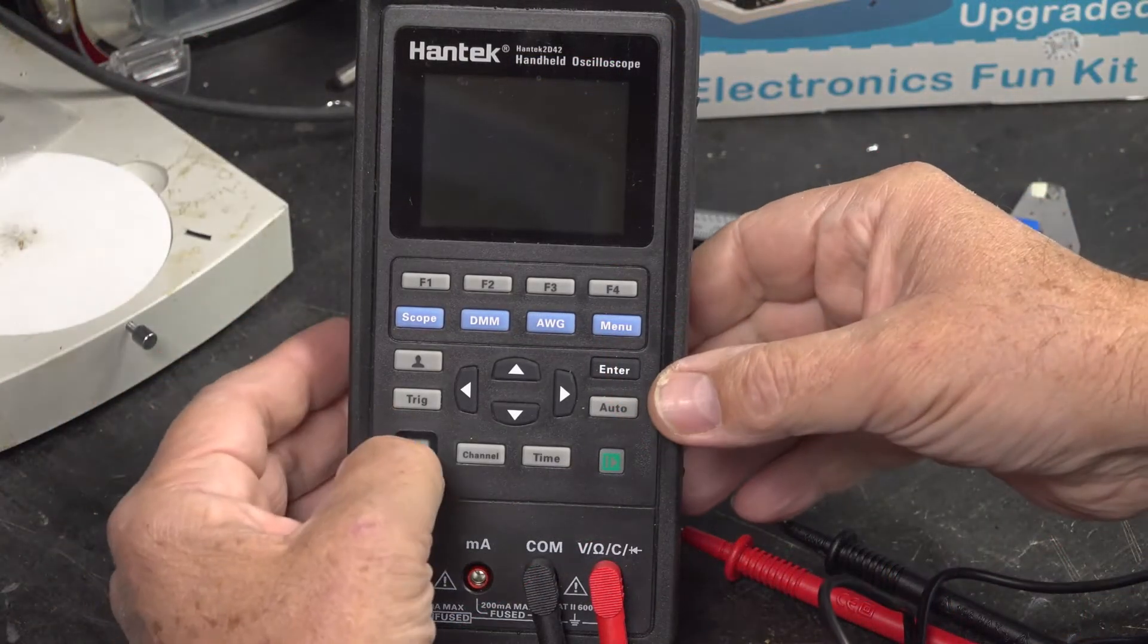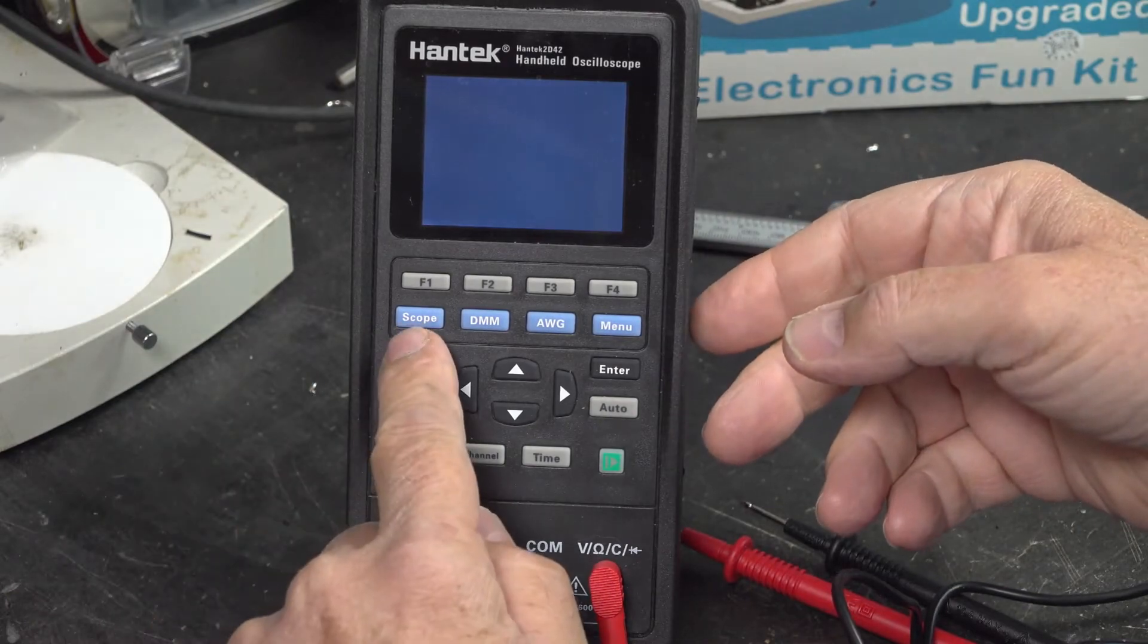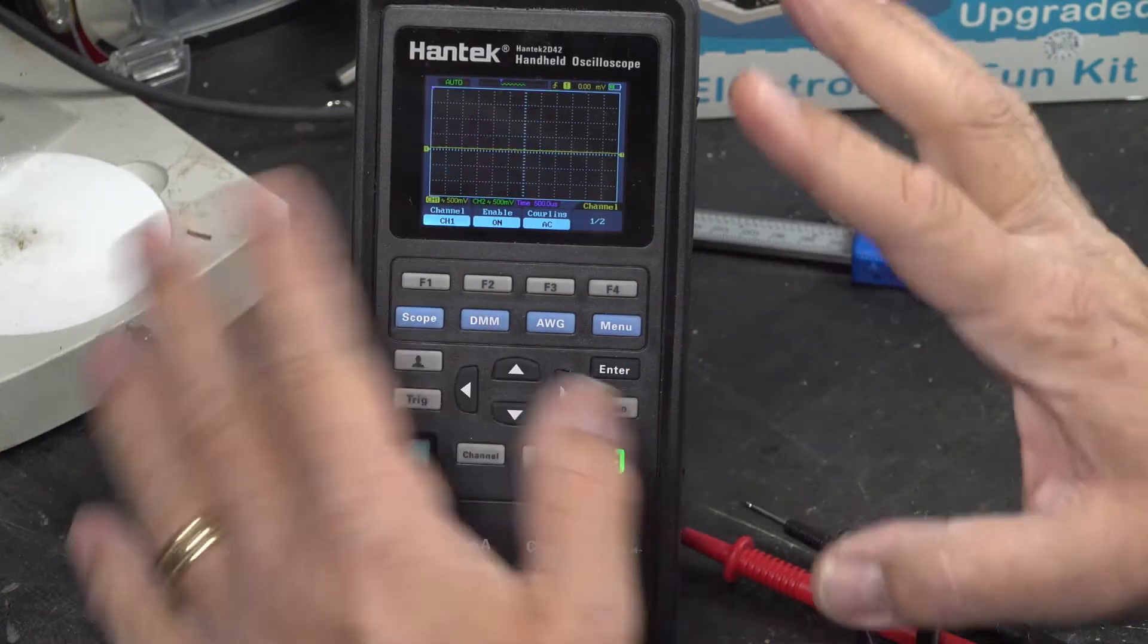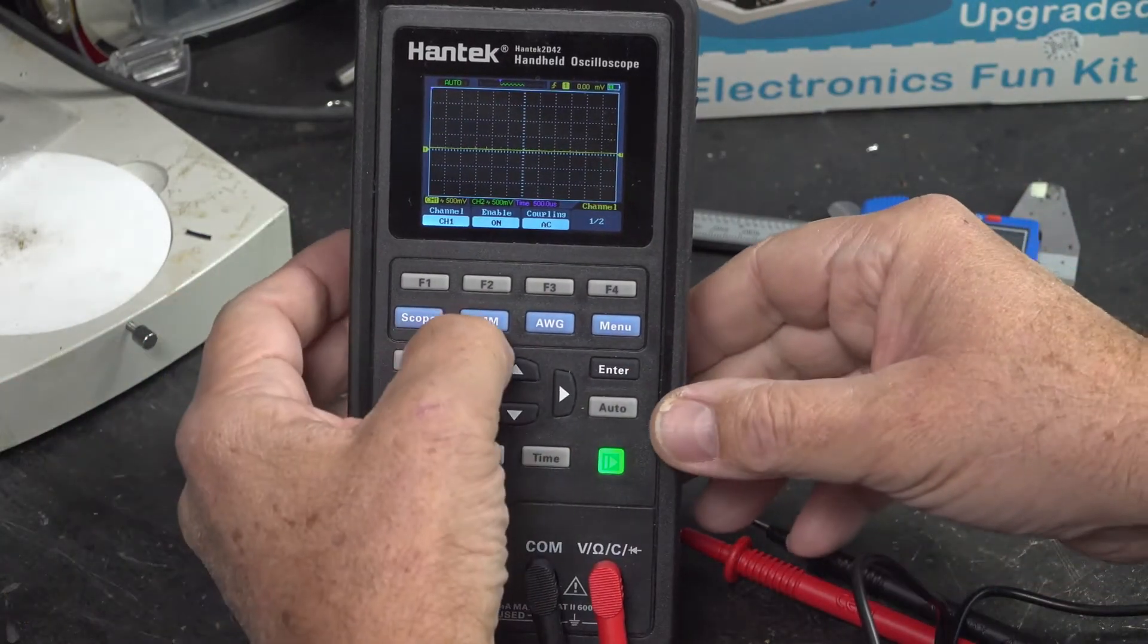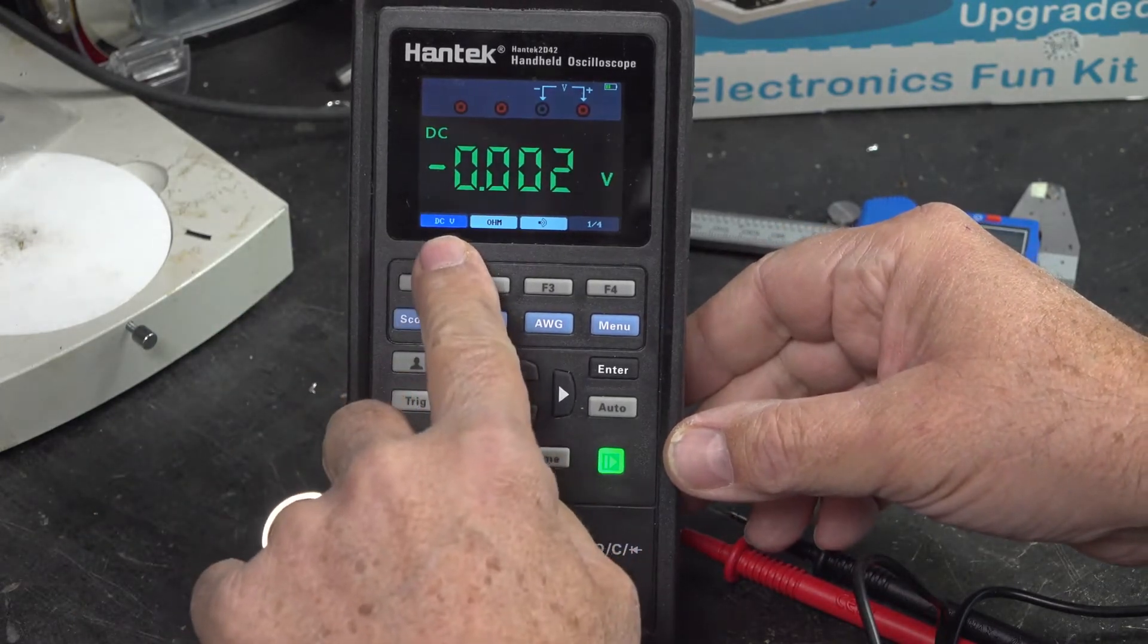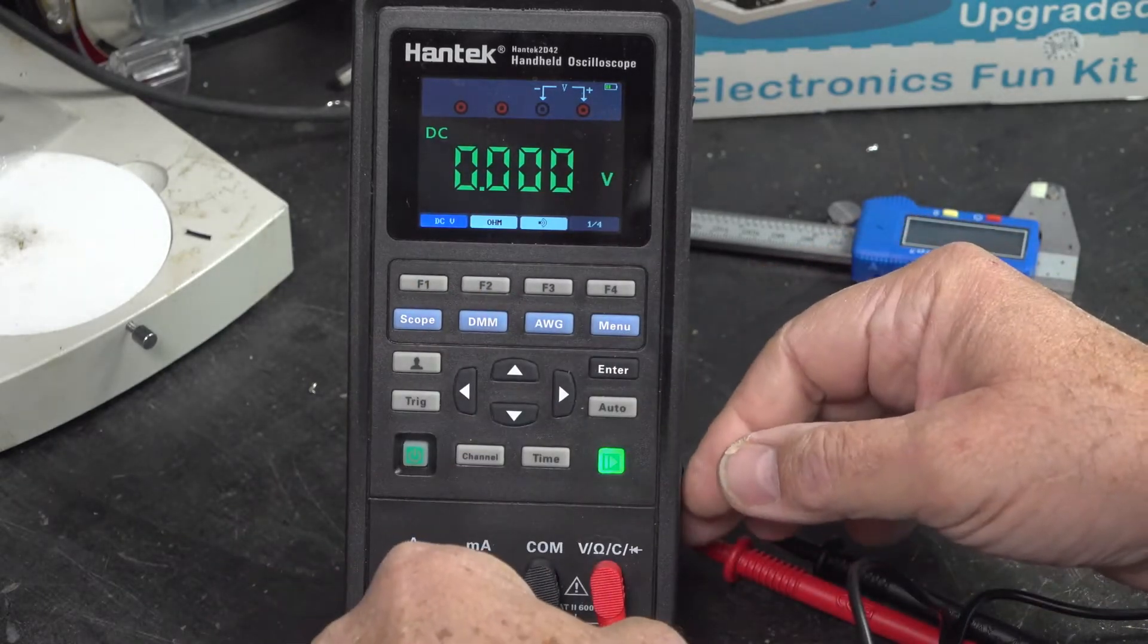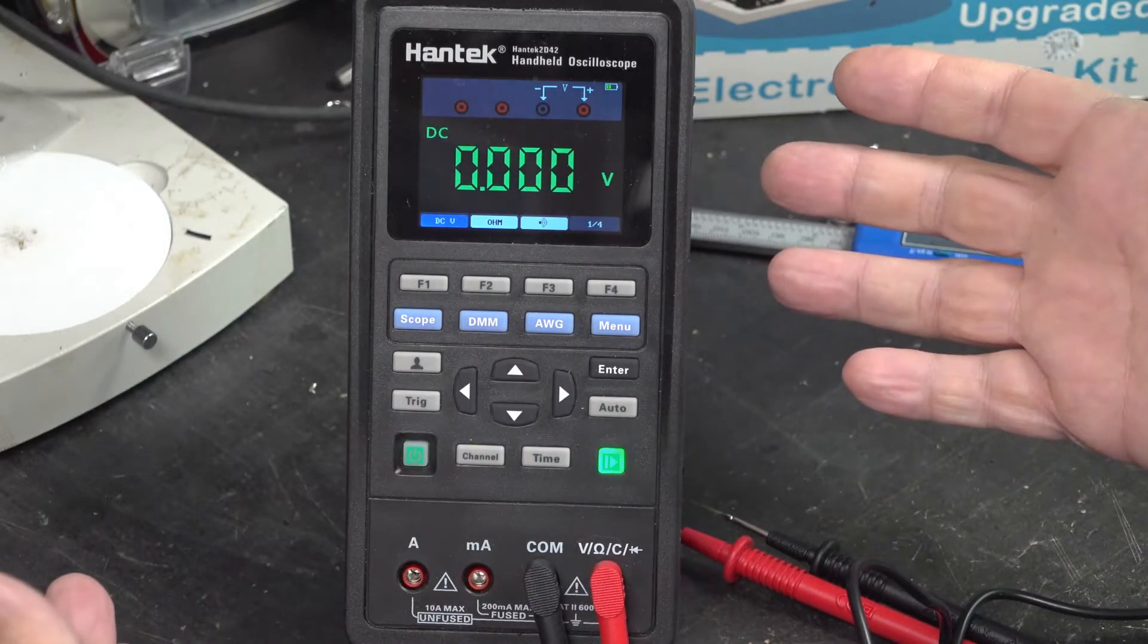First thing we're going to do is turn on the Hantec by hitting the power button. You'll see that it powers up on the default scope mode, which is what we don't want. What we really want is DMM or digital multimeter. So we hit that, it transfers over, and look at that, it's already at DC volts, and it even tells us where to plug in the plus and minus leads on the meter. So now we can measure DC voltage.